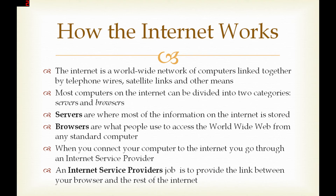The internet is a worldwide network of computers linked together by telephone wires, satellite links, and other means. Most computers on the internet can be divided into two categories: servers and browsers. Servers are where most of the information on the internet is stored. Browsers are what people use to access the World Wide Web from any standard computer. When you connect your computer to the internet, you go through an internet service provider, whose job is to provide the link between your browser and the rest of the internet.